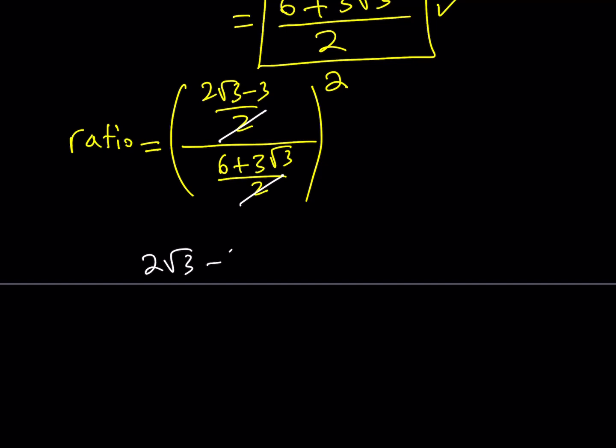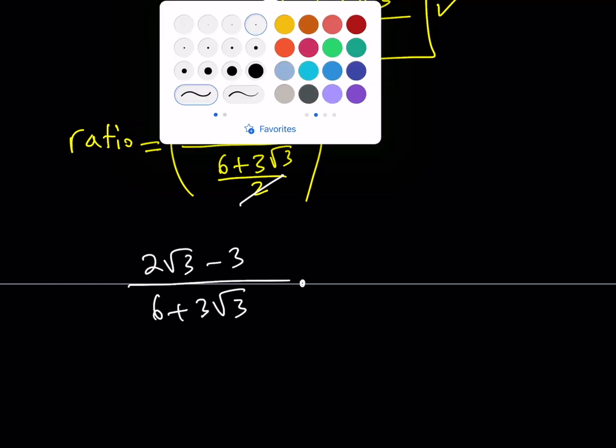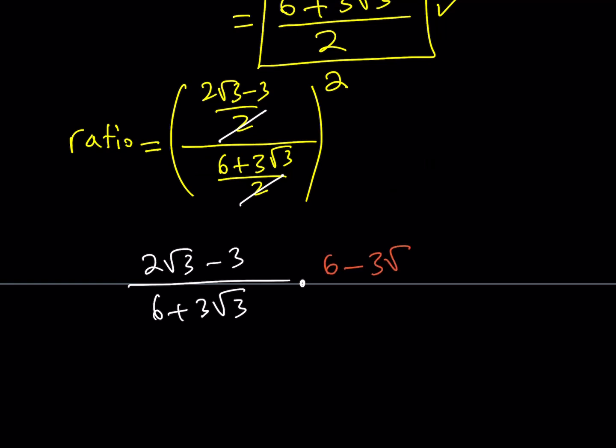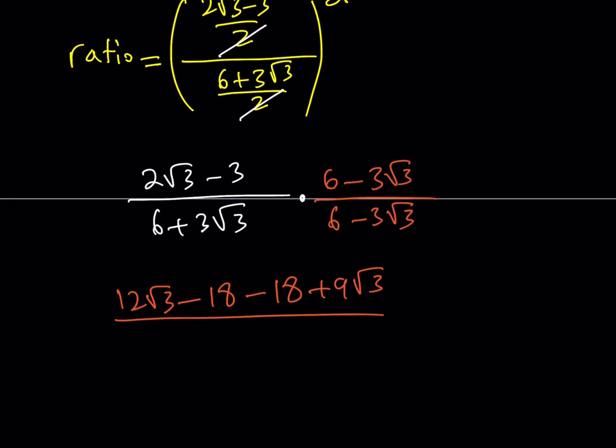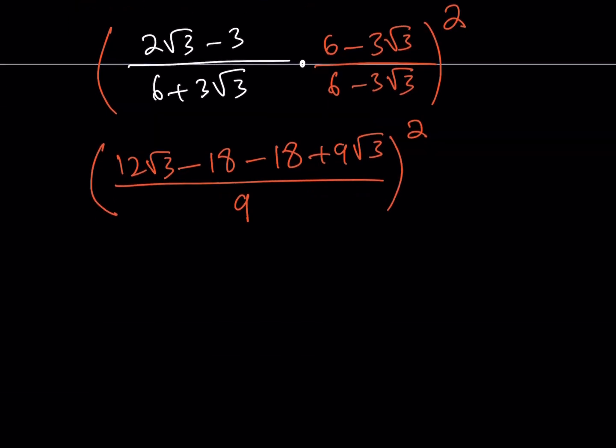So what I have is 2 root 3 minus 3 divided by 6 plus 3 root 3, which obviously can be multiplied by the conjugate. Let's go ahead and do that. The conjugate is going to be 6 minus 3 root 3 divided by 6 minus 3 root 3. And then the products. Let's go ahead and distribute this. This is going to be 12 root 3 minus 2 root 3 multiplied by 3, root 3 is 6 times 3, which is 18, minus 3 times 6 is going to be 18 again, and then plus I'm going to get 9 root 3 from here. And then the bottom is going to be a difference of 2 squares, 36 minus 27, which is 9. Awesome. Then, of course, what I need to do is I need to take that expression and square it. Okay. Let's simplify this a little bit.